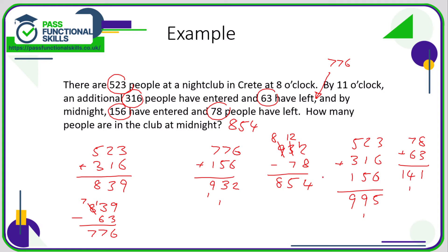So we know that a total of 995 people went into the nightclub, of which 141 came out. So 995 minus 141: 5 minus 1 is 4; 9 minus 4 is 5; 9 minus 1 is 8. We get 854, confirming our earlier answer.